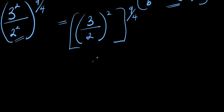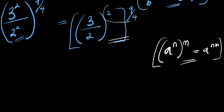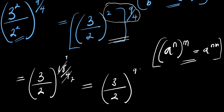The next step will be for us to apply this identity: if you have a to the power of m, raised to the power of n, this equals a to the power of n times m. So we apply this right here — that means we are going to multiply the exponents and we get 3 divided by 2, raised to the power of 2 times 9 over 4, which is 18 over 4, giving us 3 divided by 2 raised to the power of 9 over 2.